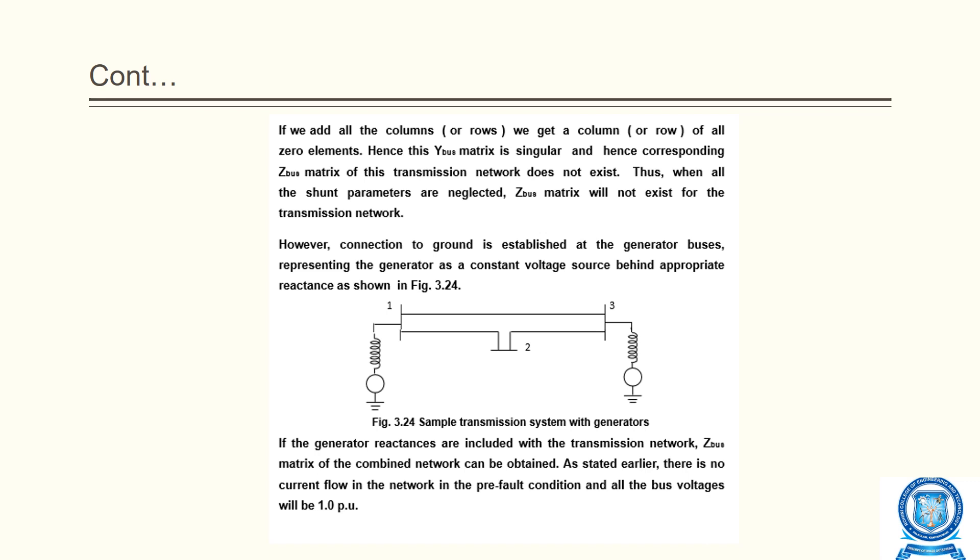However, connection to ground is established at the generator buses, representing the generator as a constant voltage source behind appropriate reactance as shown in the diagram. If the generator reactances are included with the transmission network, the Z-bus matrix of the combined network can be obtained. As stated earlier, there is no current flowing through the network in pre-fault condition and all bus voltages are 1.0 per unit.